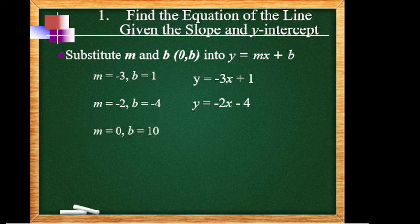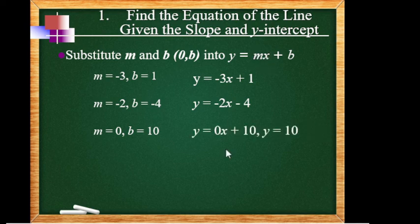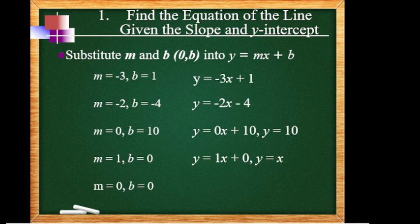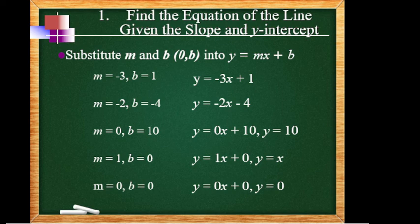Next: m = 0, b = 10. So y = 0x plus 10. Since the slope is 0, it disappears, giving y = 10. Next: m = 1, b = 0. So y = 1x plus 0 or y = x. No need to write the 1 as a numerical coefficient in the final answer. Last: both m and b are 0. So y = 0x plus 0, which is y = 0. Ganyang kadali ang paghanap ng equations ng line if we have the slope and y-intercept given.